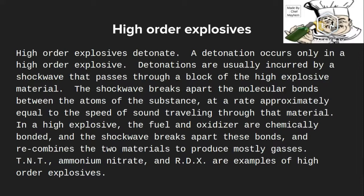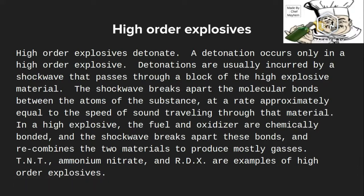In the high explosive, the fuel and the oxidizer are chemically bonded. The shock wave breaks apart these bonds and recombines the two materials to produce mostly gases. TNT, ammonium nitrate, and RDX are examples. Ammonium nitrate is found in cold packs and is also used in fertilizer bombs. RDX is the material inside grenades. These are all examples of high-order explosives. Ammonium nitrate cannot explode unless a shock wave passes through it.